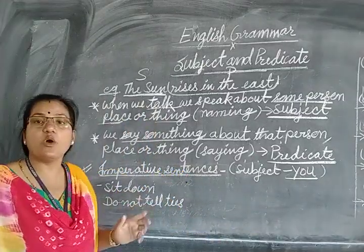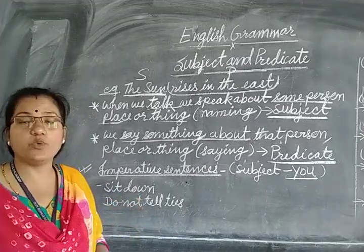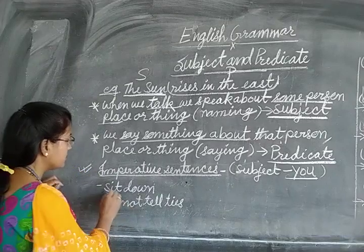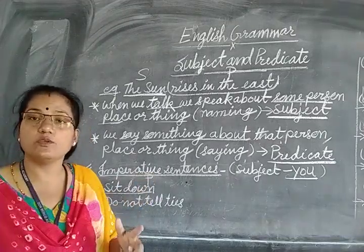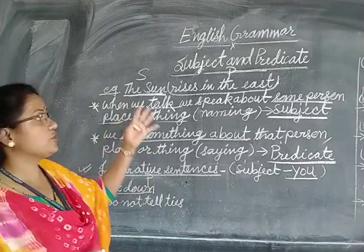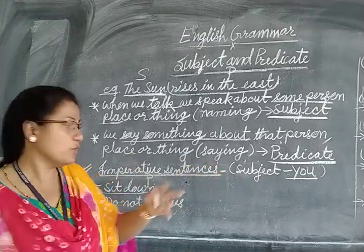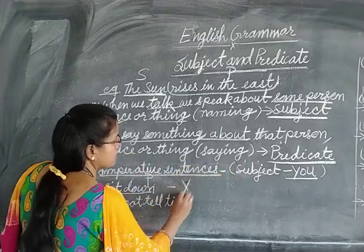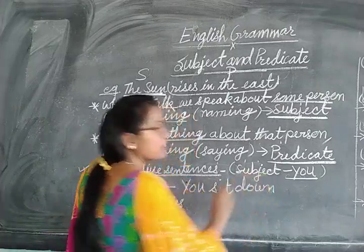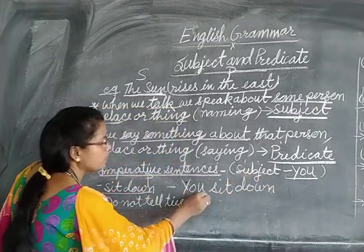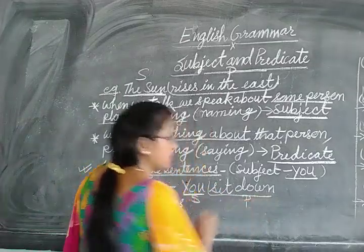Sit down. Here only the command is given. Now, how to find out which is the subject? We are talking about the second person — 'you.' So here the proper sentence will be: 'You sit down.' So here 'you' is the subject and 'sit down' is the predicate.